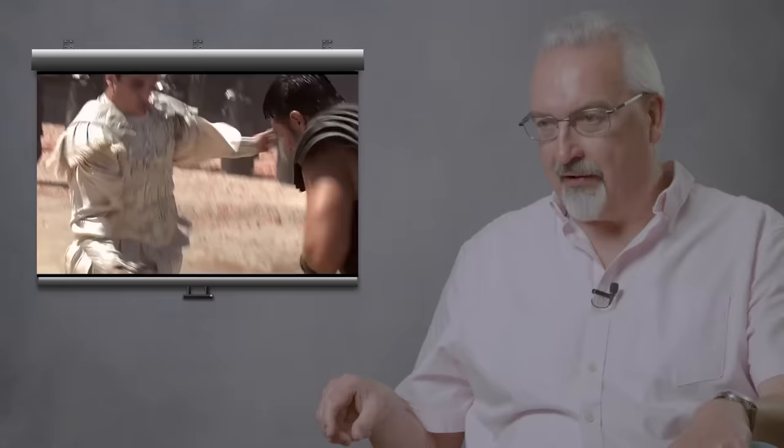Terrible weapon, the Gladius Hispaniensis. Didn't have any blood runnels, so there's no way for the air to come out of a wound and no way for the blood to run out of a wound either. So therefore, when the sword went in, it was very difficult to take out. So you had to give it a massive twist, which created a terrible, terrifying wound. So it was a psychological weapon.